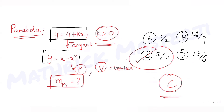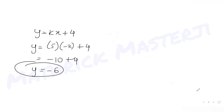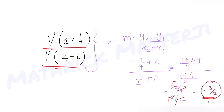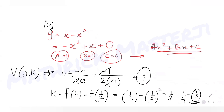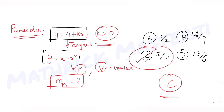To summarize: we used the tangency condition (discriminant = 0) to find k = 5, then found point P at (-2, -6). Using the vertex formula we found V at (1/2, 1/4), and the slope through P and V is 5/2 — option C is the correct answer.